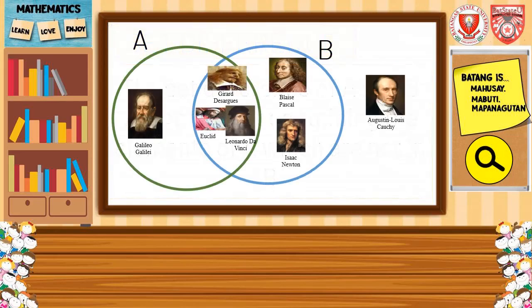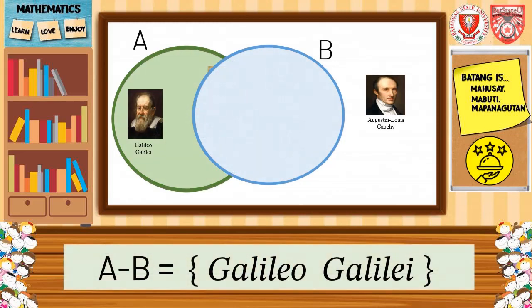From the activity, set C, which we get from eliminating mathematicians with hair length below the ear from set A, is actually the set A minus B. Then we get whatever is left in A, that is Galileo Galilei. Thus, A minus B is equal to C, where C is Galileo Galilei.